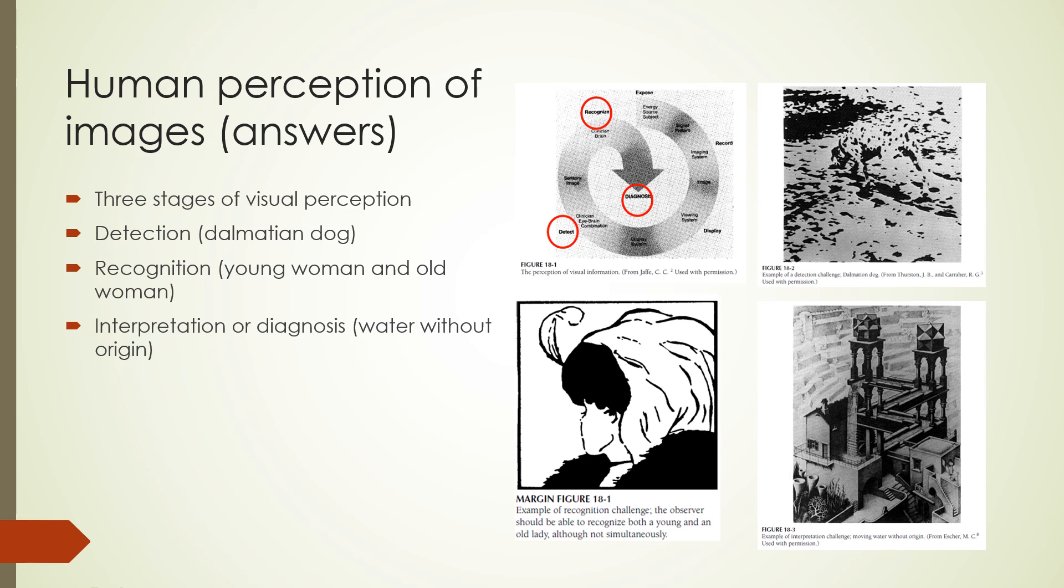Here are the answers to the visual perception challenge. Viewers should see a Dalmatian dog in the detection challenge, a young woman and an old woman in the recognition challenge, and the interpretation challenge is water flowing without an origin. Let's finish up with a few questions.